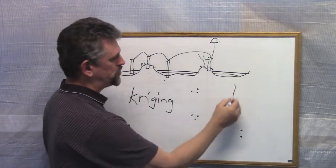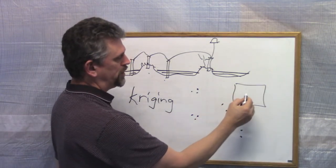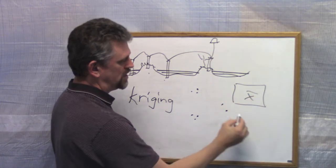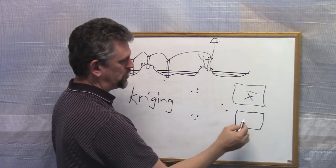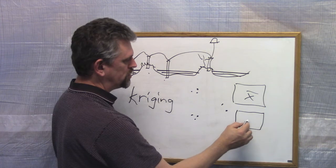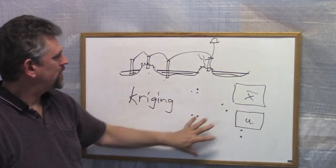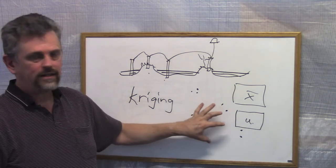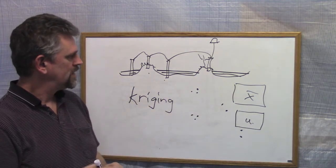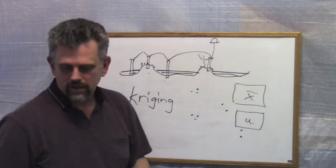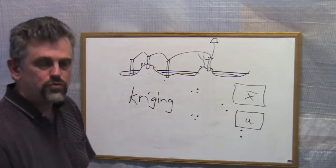The kriging produces two maps. It produces the average, and it produces a map over uncertainty. So you can see where do I have a lack of data in this area.